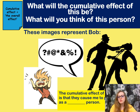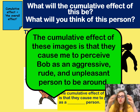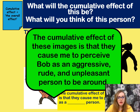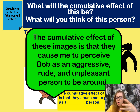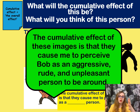From these images, I'm going to think of Bob as an aggressive, rude, and unpleasant person to be around. As you can see, he's getting into fights, arguing, and being quite rude. That's the effect — what I can infer from these images — but I need all the images together to reach that conclusion.